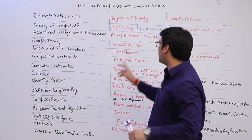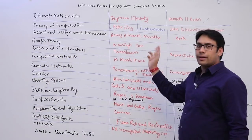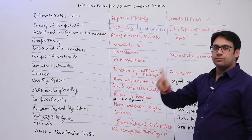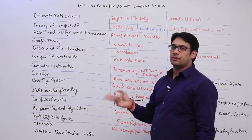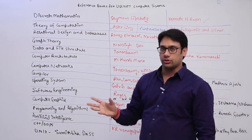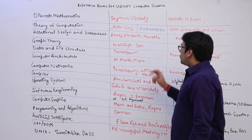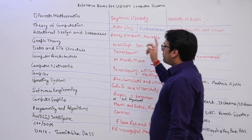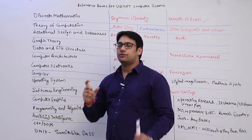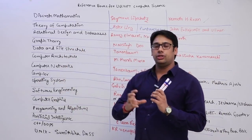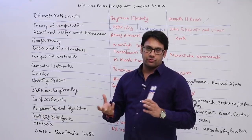For Databases — that is relational design in databases — we have two books: Navathe and Korth. You should buy both books because some topics are covered better in Navathe and some topics are covered better in Korth, so you need to refer both.